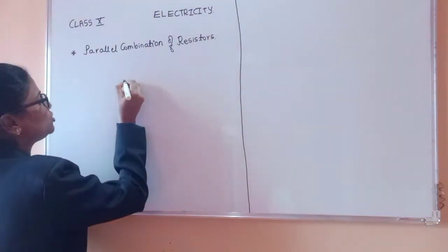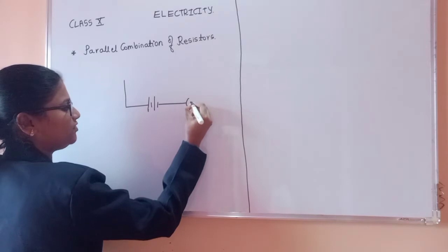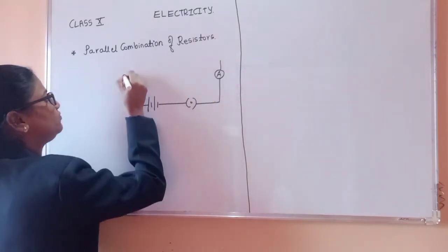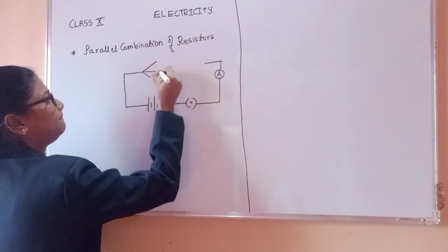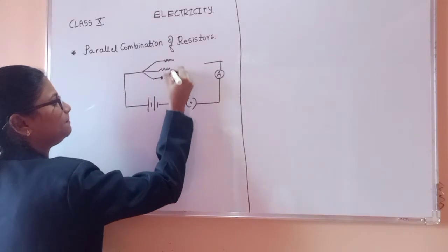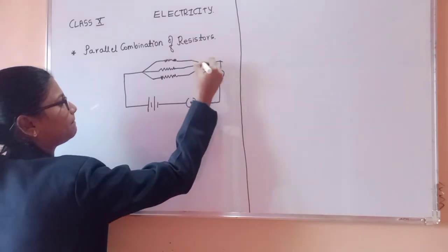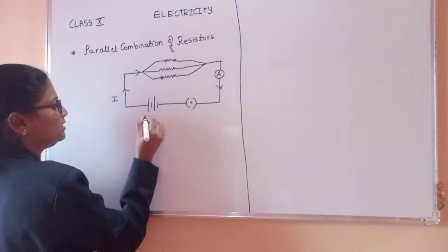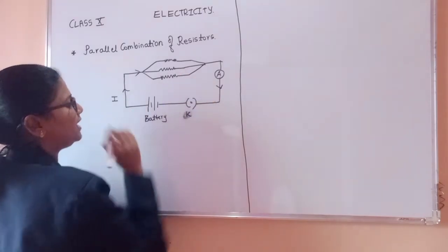So here, a circuit will have a battery of certain potential difference, connected to a key, and we will have an ammeter to measure the flow of current. Here the resistors are connected parallelly. We can take them as R1, R2, and R3. The current will be flowing through this, so let us name this current as I. This is the battery, this is the key K, and this is the ammeter.